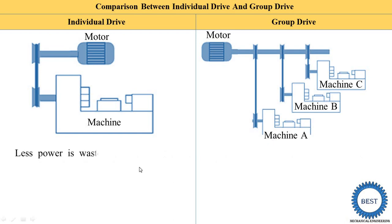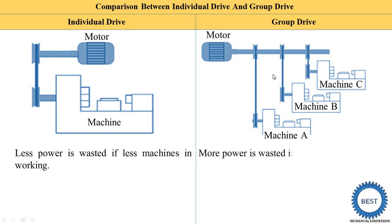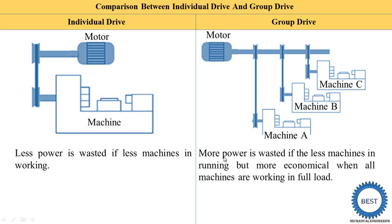Another point: less power is wasted if fewer machines are working. In an individual drive, suppose we have 10 machines and want to run only two — the other eight motors are stopped, so less power is wasted. In a group drive, the one motor runs for all 10 machines even if only two are working, so more power is wasted. If more machines are working, less power is wasted in a group drive.